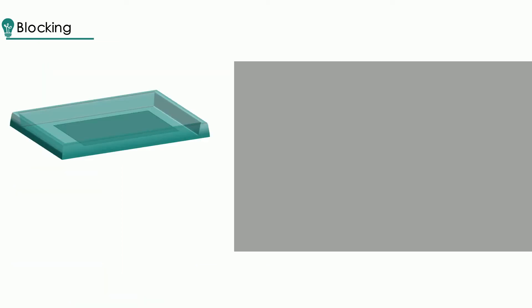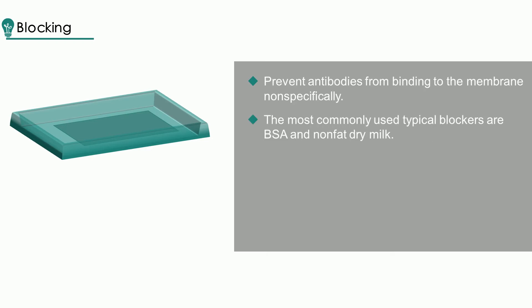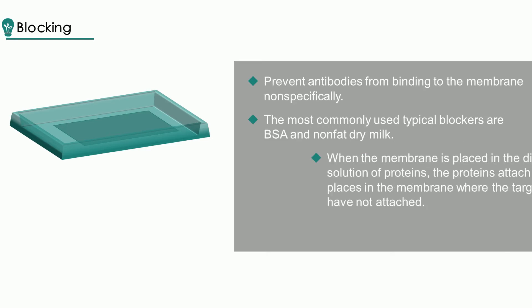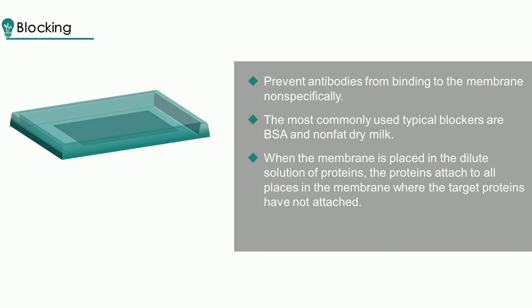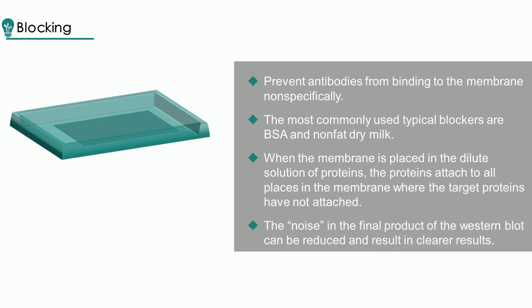Blocking is an important step in Western blot to prevent antibodies from binding to the membrane non-specifically. The most commonly used typical blockers are BSA and non-fat dry milk. When the membrane is placed in the dilute solution of proteins, the proteins attach to all places in the membrane where the target proteins have not attached. In this way, noise in the final product of the Western blot can be reduced, resulting in clearer results.